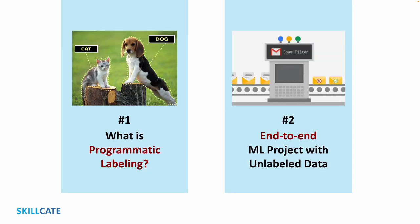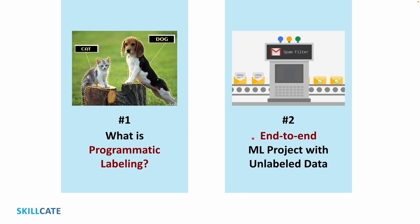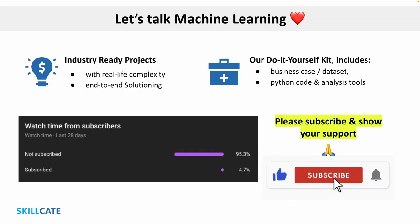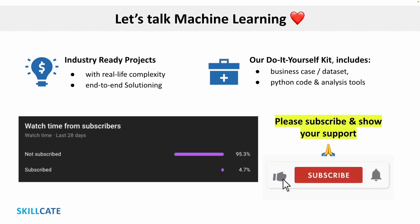In this two-part learning series, I'll explain what programmatic labeling is, which I'll cover in the first part. And then in the second part, I'll take you through an end-to-end machine learning project by first labeling an unlabeled dataset using the popular programmatic labeling technique called Snorkel, and then use the labeled data for building a machine learning model. We are Skillgate and we launch new machine learning projects every month, so make sure you subscribe to our channel and hit that bell icon so you get notified of all our upcoming free data science projects.